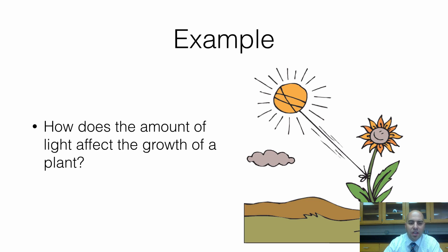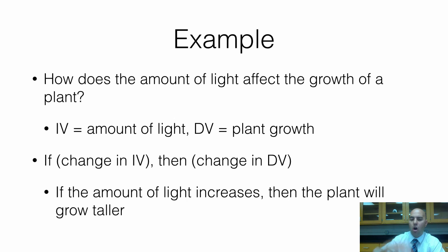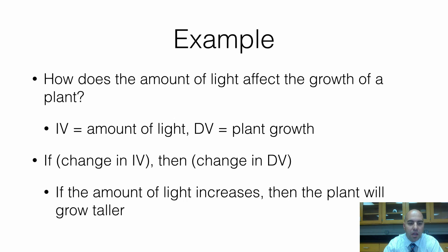Let's say we want to see how the amount of light affects the growth of a plant — that's our scientific question. The variable I'm in control of is the amount of light shining on the plant. The dependent variable is how much the plant grows — I'll say how tall it grows to be more specific. So for our if-then hypothesis: if the amount of light increases, then the plant will grow taller.